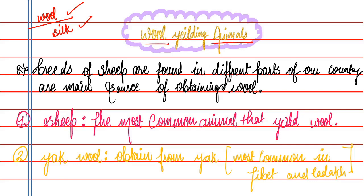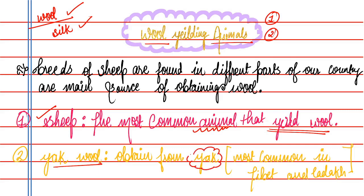Different breeds of sheep are found in different parts of our country. Sheep are the main source for obtaining wool. India is among the top countries for wool production, along with Tibet and China. Yak wool is also obtained — yak is a large animal and the most common source of yak wool is Tibet and Ladakh.